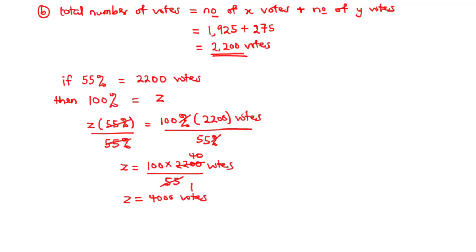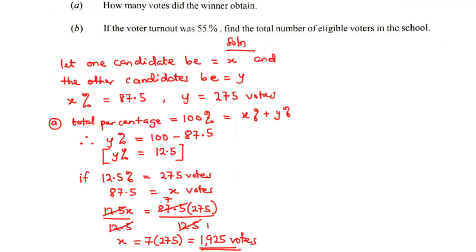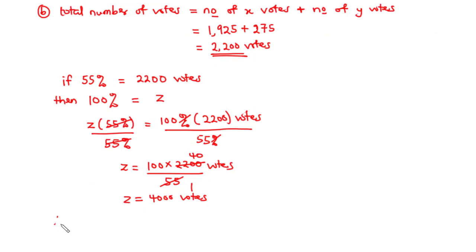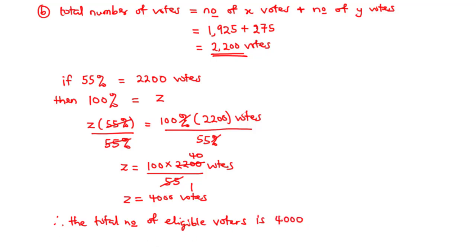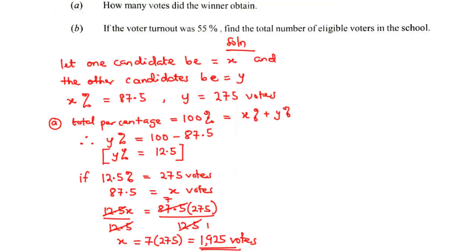Therefore, the total number of eligible voters is 4000. And for Part A, the winner obtained 1925 votes. That's it for today's video. Thanks for watching and see you in my next video.